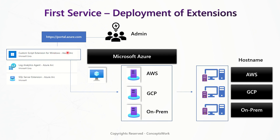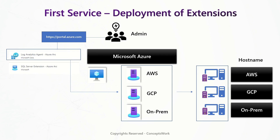Here's how the exact extension deployment workflow works. As an admin I can go to portal.azure.com and, for example, if I have to deploy a script, I select that extension option. The extension gets mapped to the Azure Arc resource, and then the respective script gets deployed on the actual VM — whether it exists on-prem, AWS, or GCP. The same extension tab can also be used to deploy the Log Analytics agent, and the workflow remains the same.